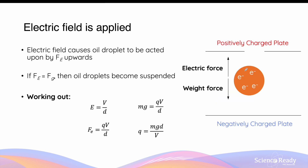After the oil droplets have acquired electrons, Milliken applied an electric field whereby the top plate above the chamber is positively charged and the bottom plate below the chamber is negatively charged. Since the oil droplets have acquired a negative charge due to the electrons, they will experience a force due to the electric field upwards. At the same time, they are also affected by gravity, therefore experiencing a weight force going downwards. Milliken adjusted the strength of the electric field such that the magnitude of the force due to the electric field equals the magnitude of the weight force of the oil droplets.